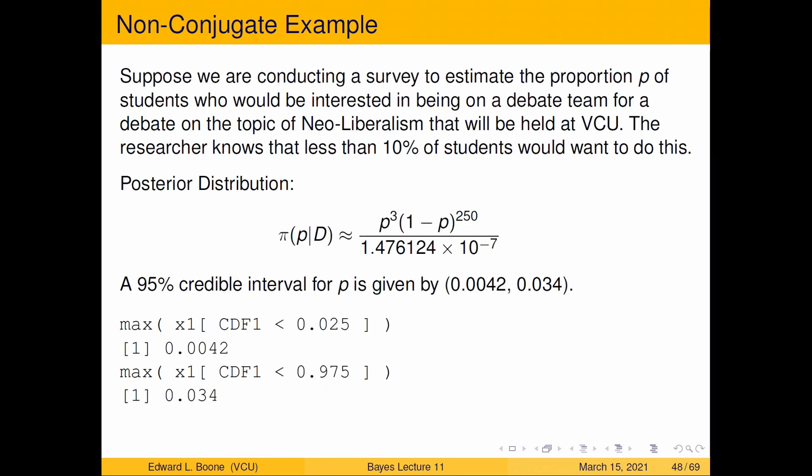How do I do that in R? I can use this idea. I can take the maximum of x1 where the CDF is less than 0.025, because in my CDF function, it's unlikely to actually be that exact value, but I can get really close. This is the number that comes out, and I could also calculate it for the upper bound. Maximum x1 of where cdf1 is less than 0.975, and I end up with 0.034.